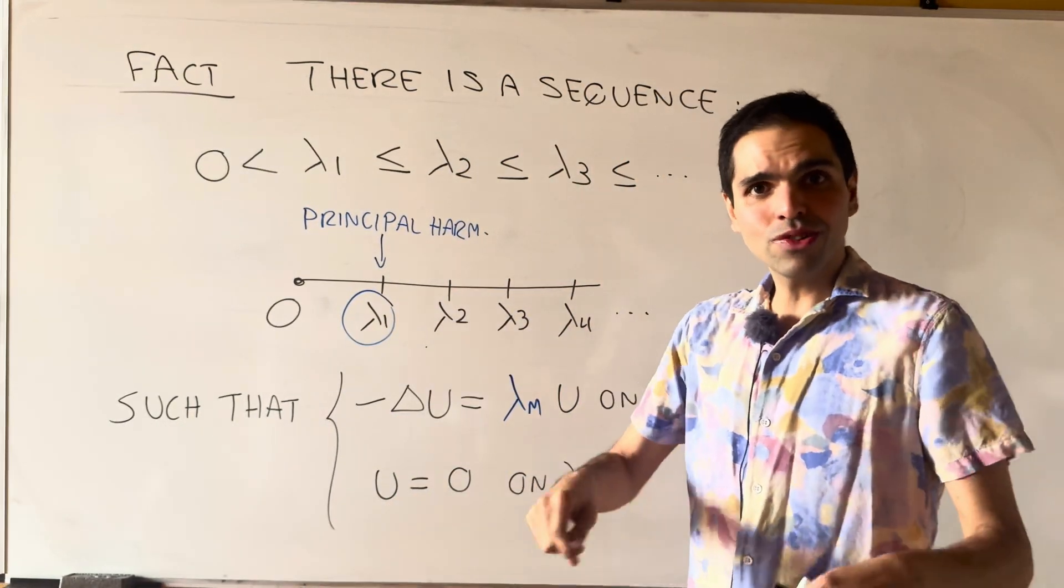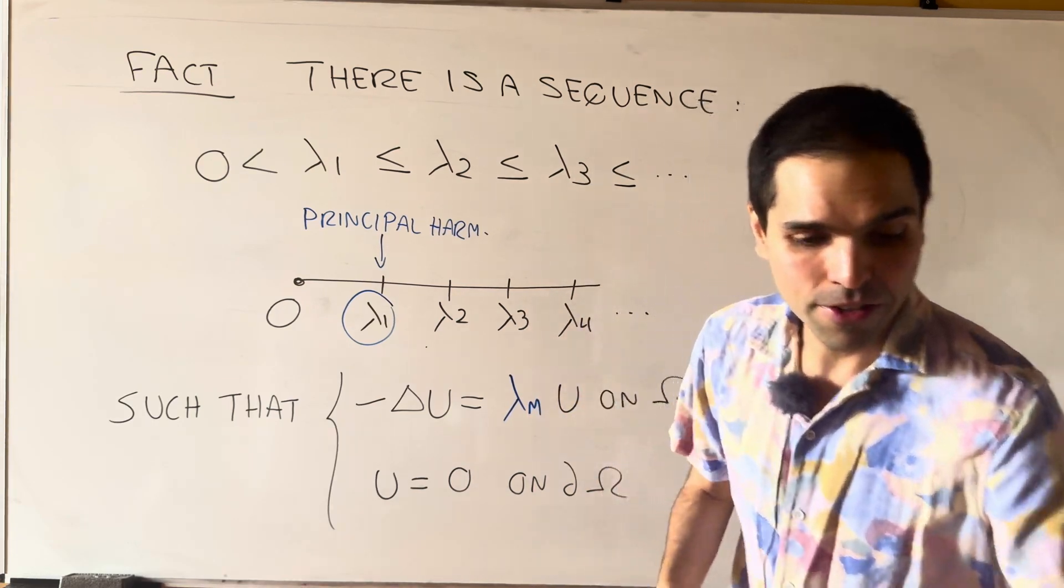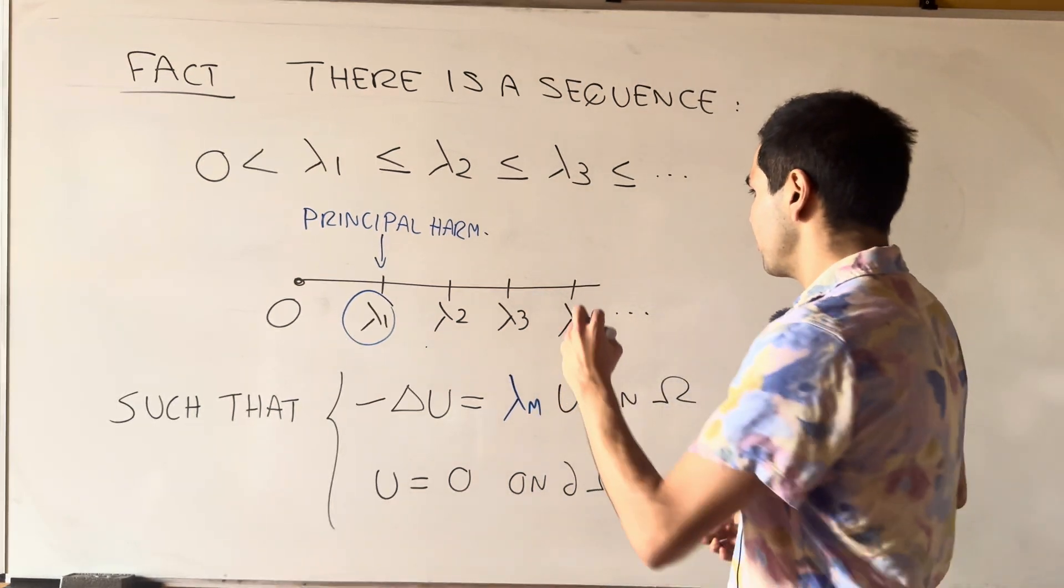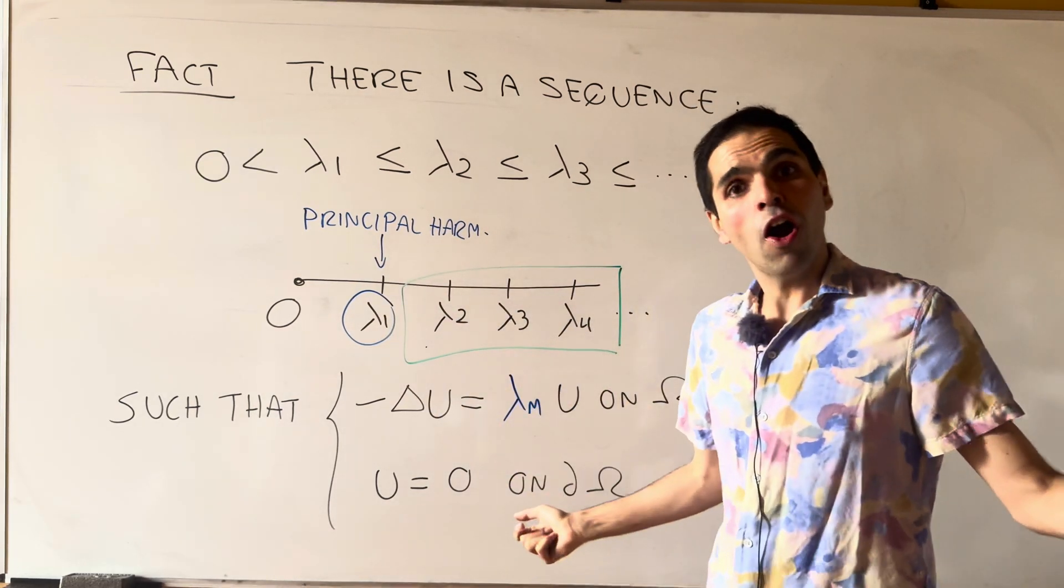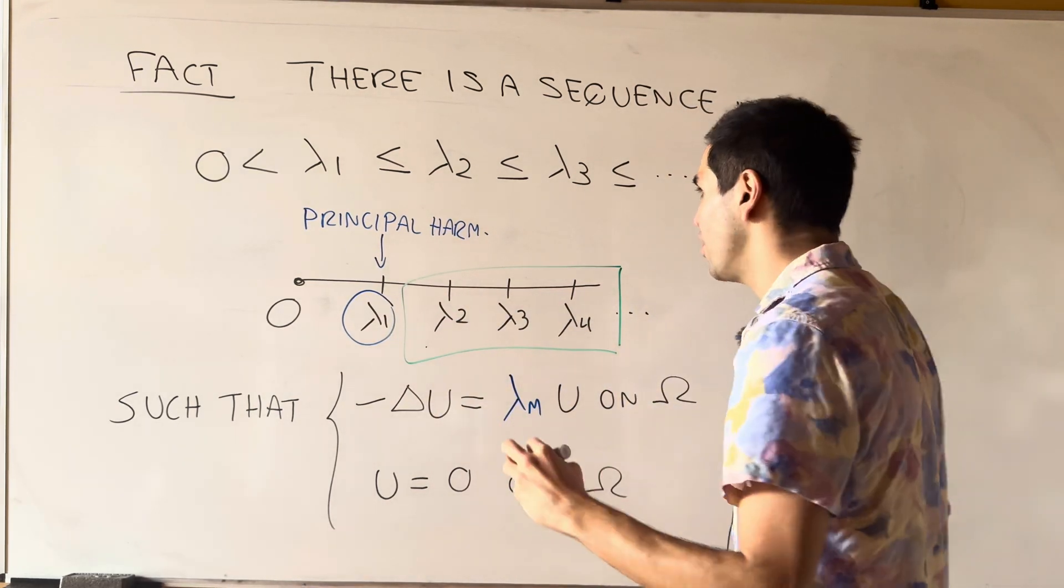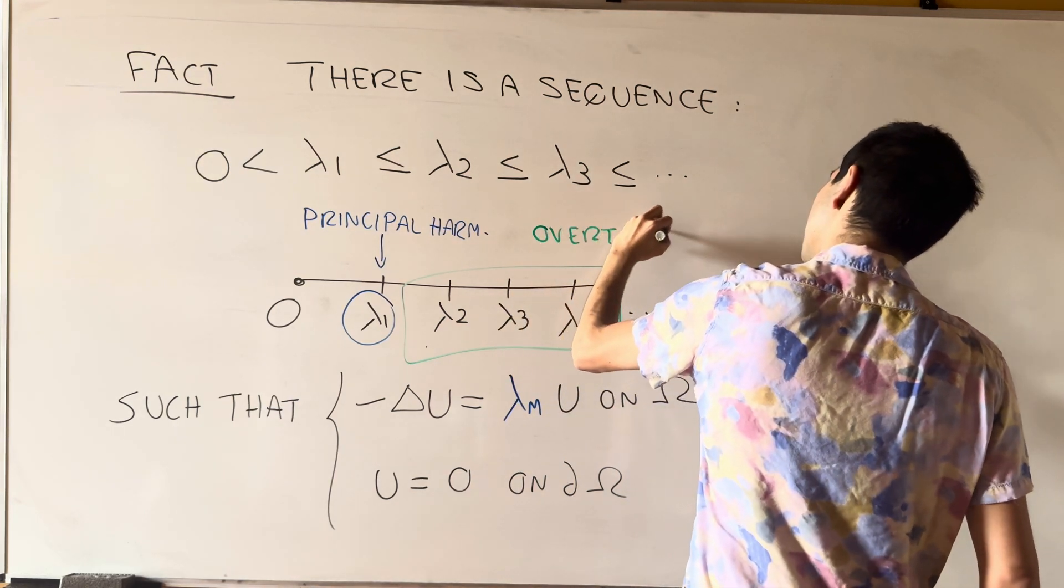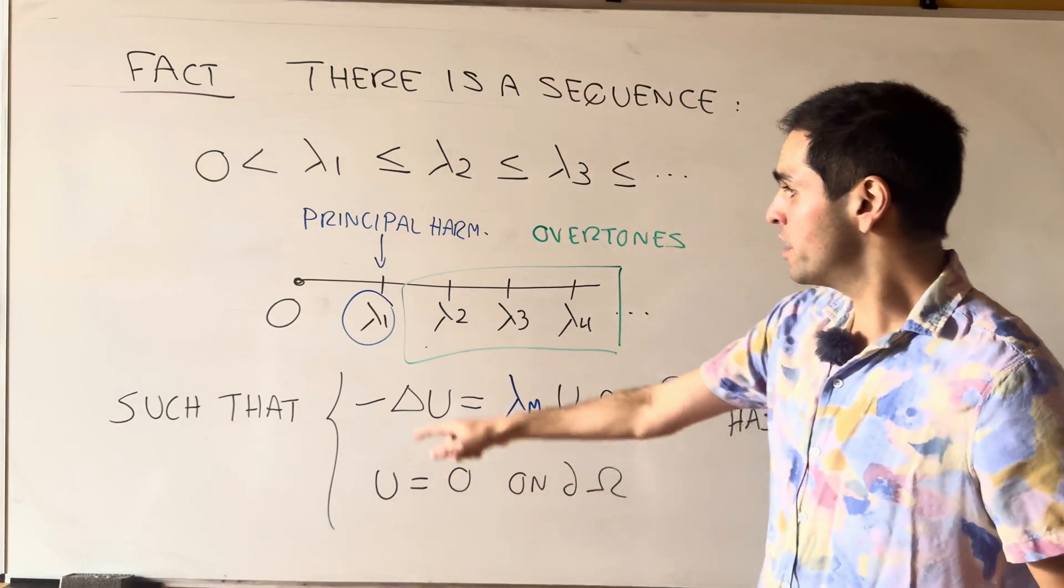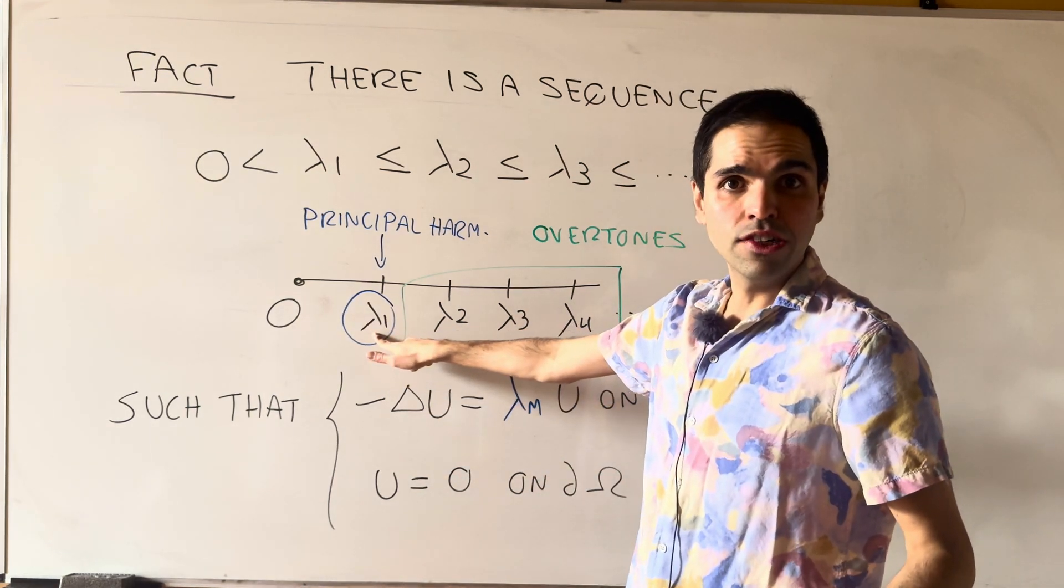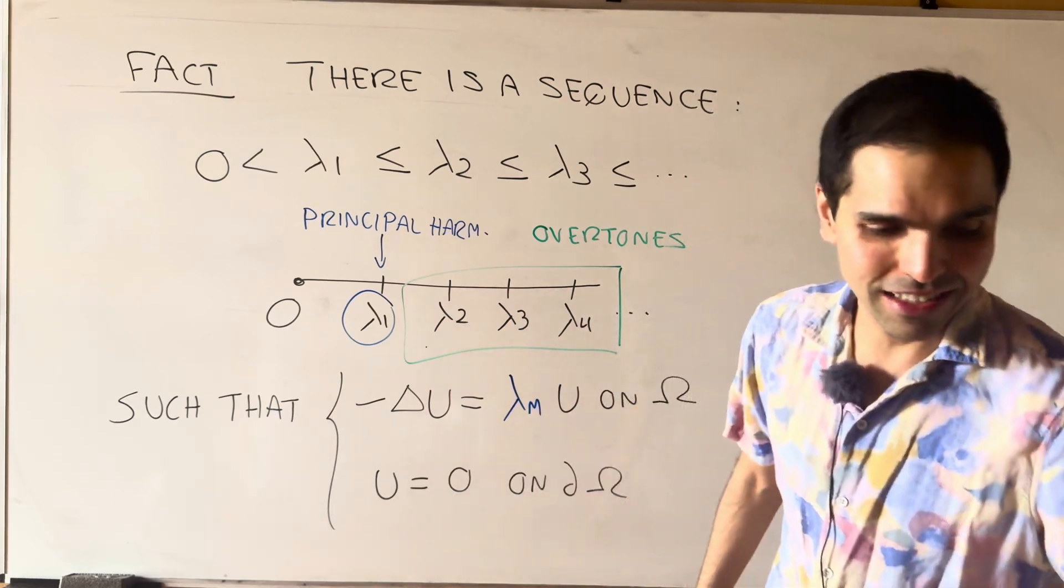So when you play the drum and you hear the do-do-do, that's kind of the sounds that you hear. And the other ones, they're sort of the accompaniment, and those are called the overtones. So whenever you play a musical instrument, the main sound that you hear is this lambda one, the other ones are the lambda two, lambda three, etc.